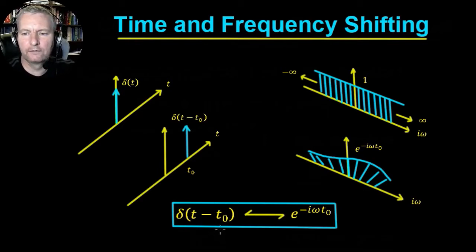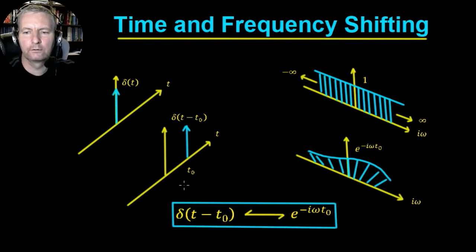So the Fourier transform pair we've seen before is: delta(t - t0) transforms to e to the minus i·omega·t0. But now we're interested in doing this not with the delta impulse function, but with some general function f(t), which we'll see in the next slide.